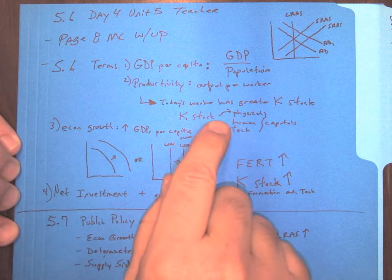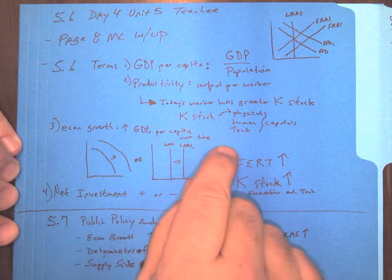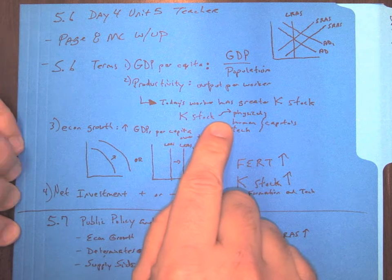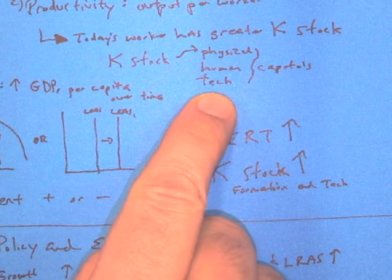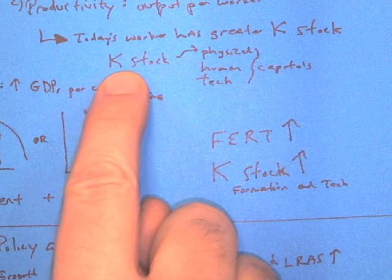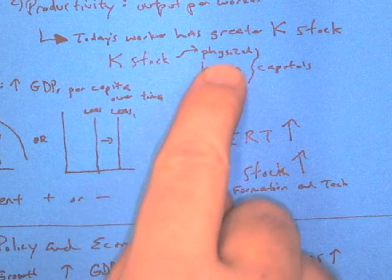Well, we can do this by giving more capital stock. So capital stock can refer to these three items right here, and that can be our physical capital, our human capital, and technology. So K is for capital, and that stock can be all three of these things.